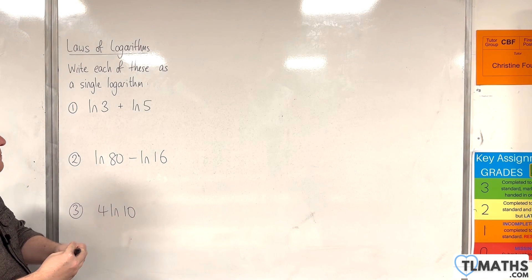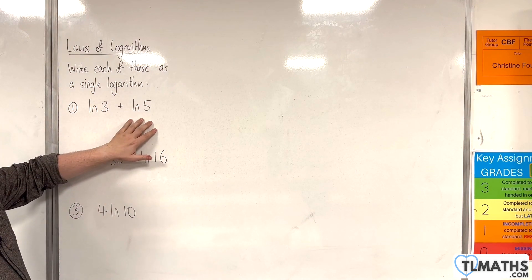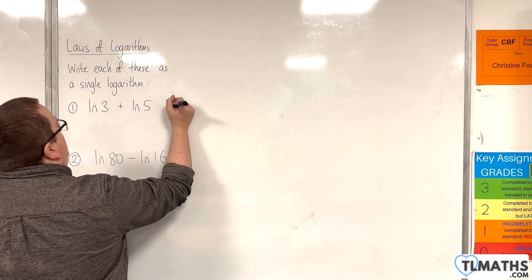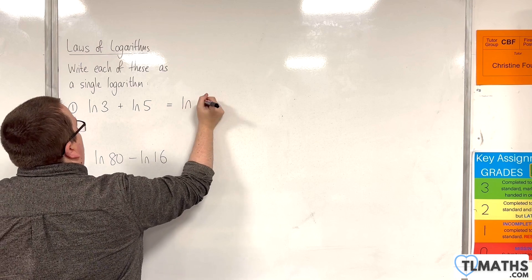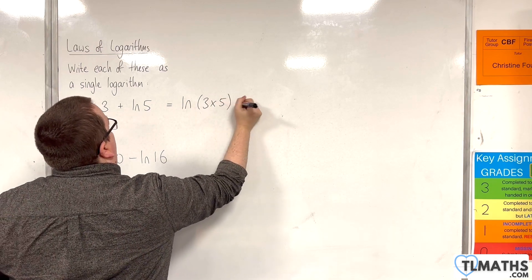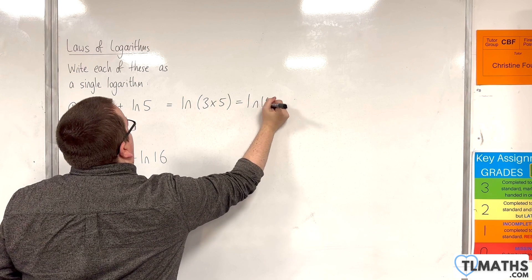So, number one, we've got natural log of 3 plus the natural log of 5. So, we can use the product rule here to write that as the natural log of 3 times 5. So, that would be natural log of 15.